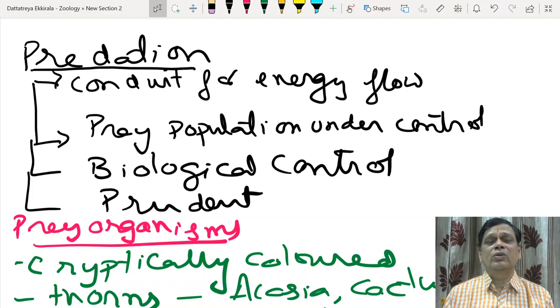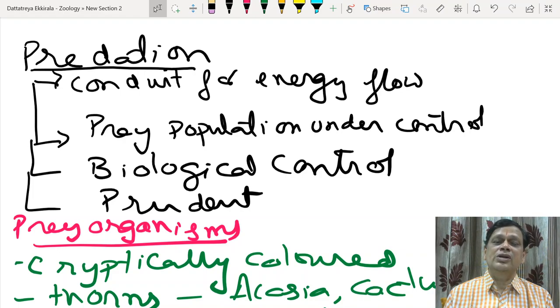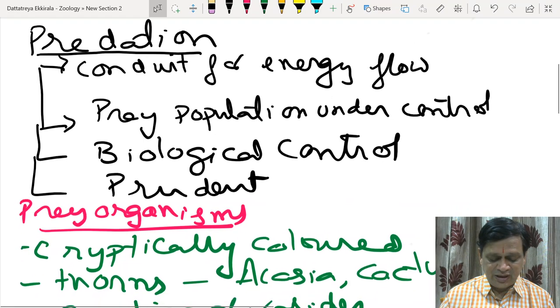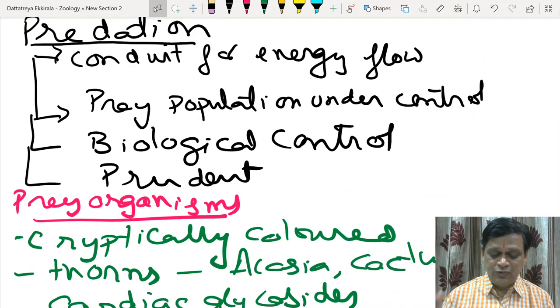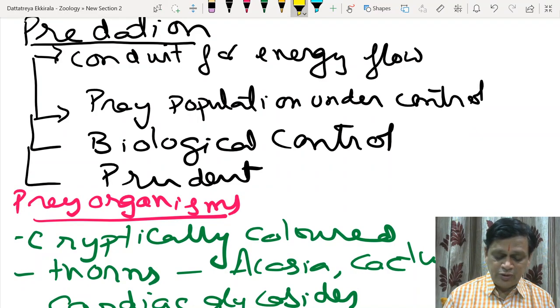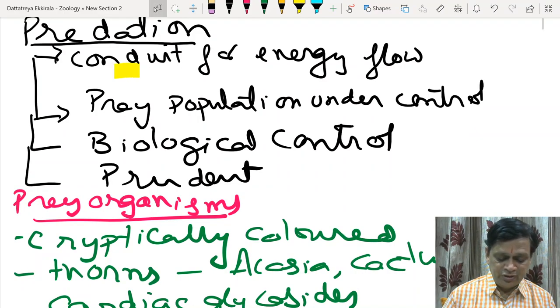We get doubt: should herbivore be called predator or not? In general sense, we do not call herbivore as a predator. But from ecology point of view, you should treat even that as a predator because it is predating on plants. Plants, the problem is they cannot escape, they cannot move easily. So energy flow, it is forming a conduit for energy flow.